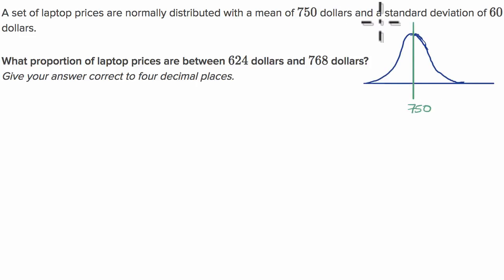They also tell us we have a standard deviation of $60. So one standard deviation above the mean would be roughly right here - that would be $750 plus $60, so $810. One standard deviation below the mean would put us right about there, at $750 minus $60, which would be $690.